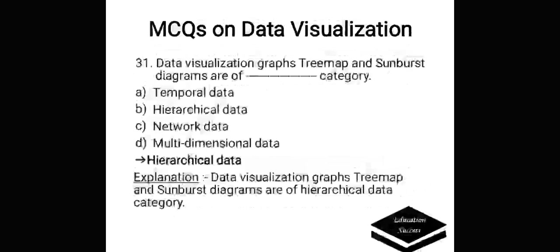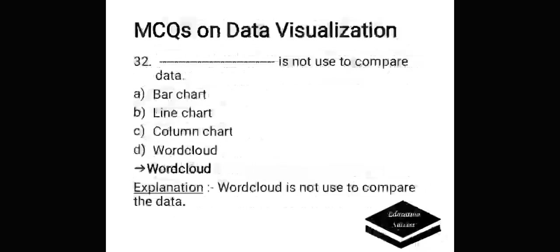Data visualization graphs — tree map and sunburst diagrams are of which category? Options are: A. Temporal data, B. Hierarchical data, C. Network data, D. Multidimensional data. Correct answer is hierarchical data.